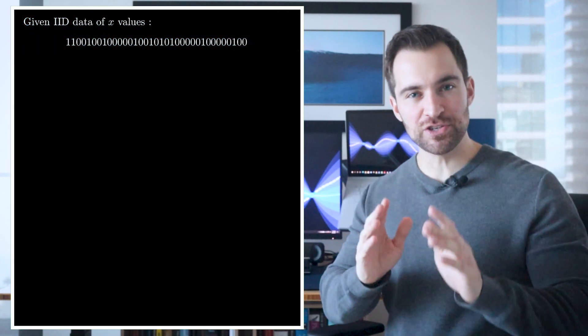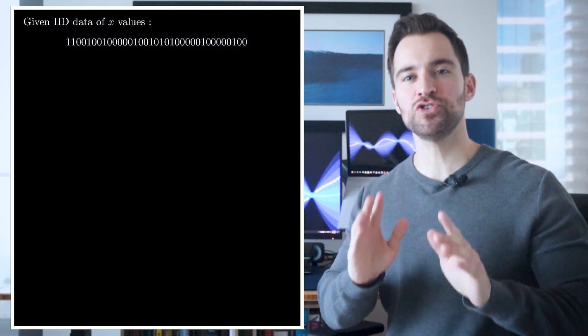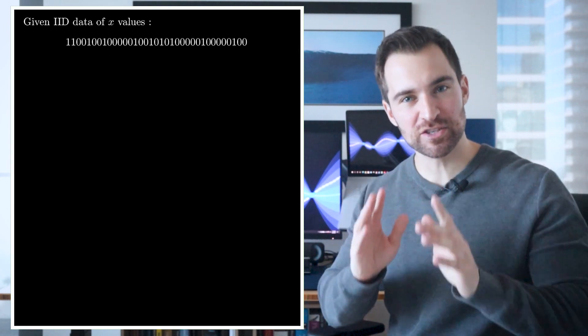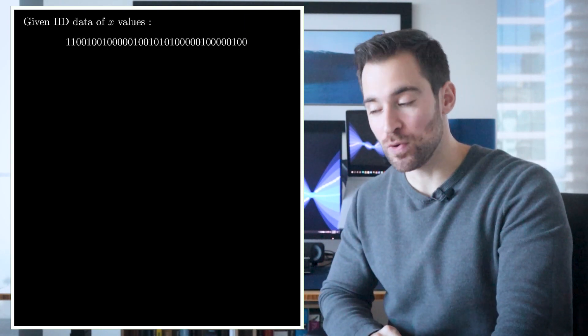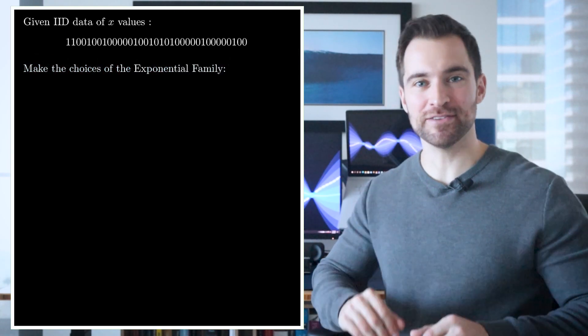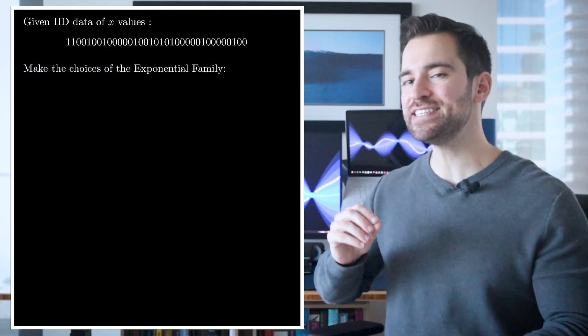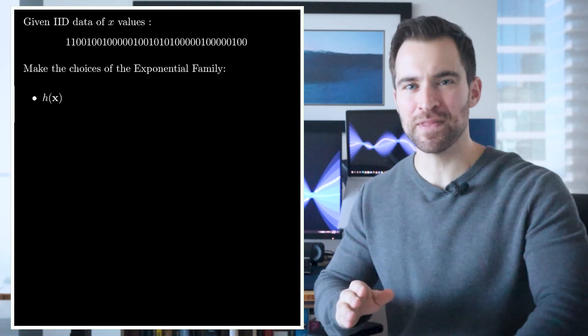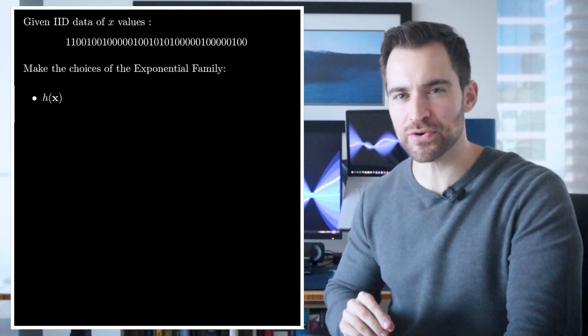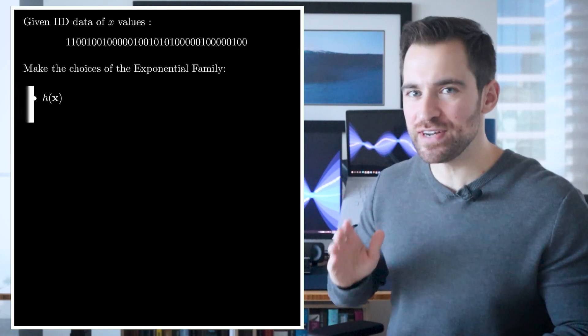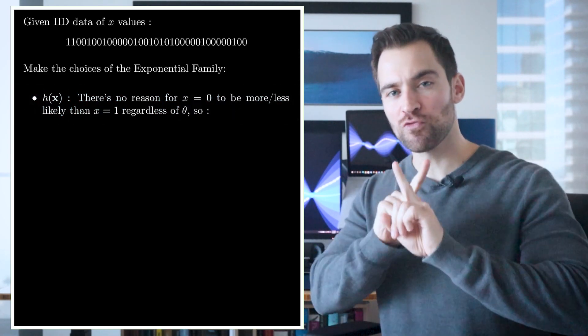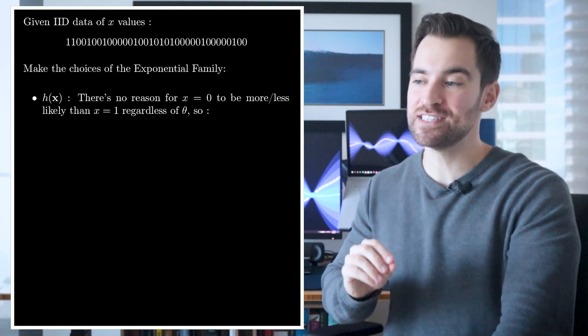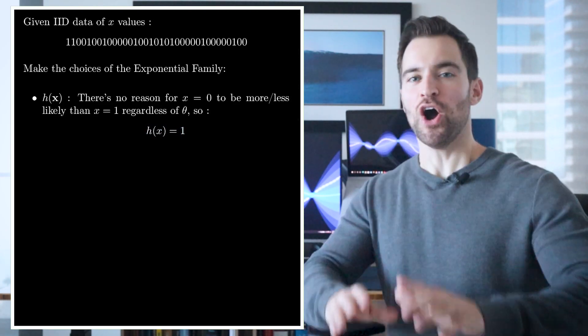Let's say we were faced with this binary data, which we will assume is independent and identically distributed, and we want to determine a distribution from the exponential family to model this. Well, we'll start by making those choices. First, what is h of x? Well, there are only two outcomes, 0 or 1, and they're merely labels of two categories. So I see no good reason to assign a higher likelihood to one over the other, regardless of the parameters. So let's set h of x to 1.